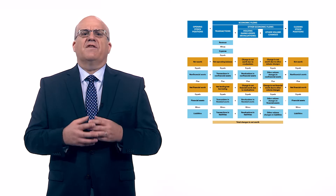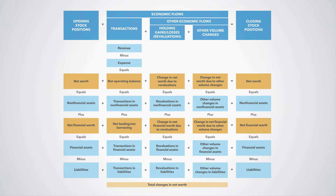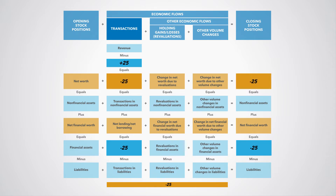Let us assume government pays interest of 25 in cash on a loan from the central bank. Again, if we go through the standard set of questions, we can determine that this is a transaction in the form of an expense. Government is using its cash deposits to pay this interest, which leads to a decrease in its financial assets in the form of cash and, thus, a decrease of 25 in its net worth. We record an expense of 25 and a decrease in cash of 25. The operating balance is thus minus 25, explaining the reduction in net worth. The net lending/net borrowing balance is also minus 25.